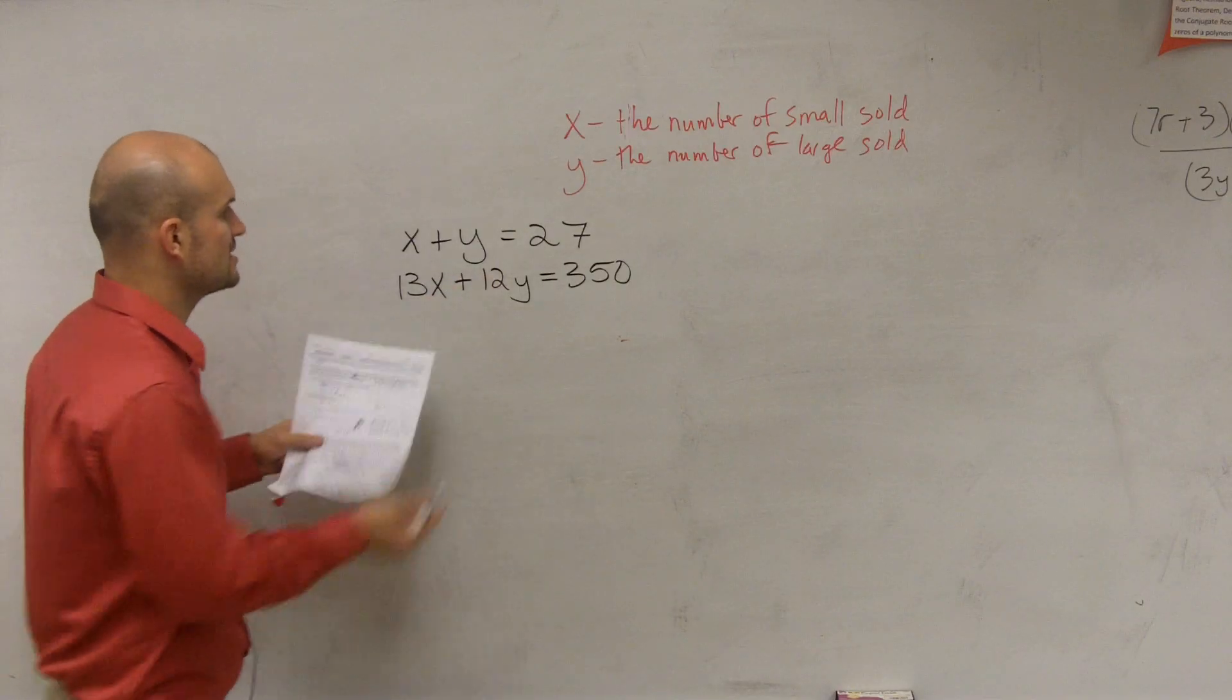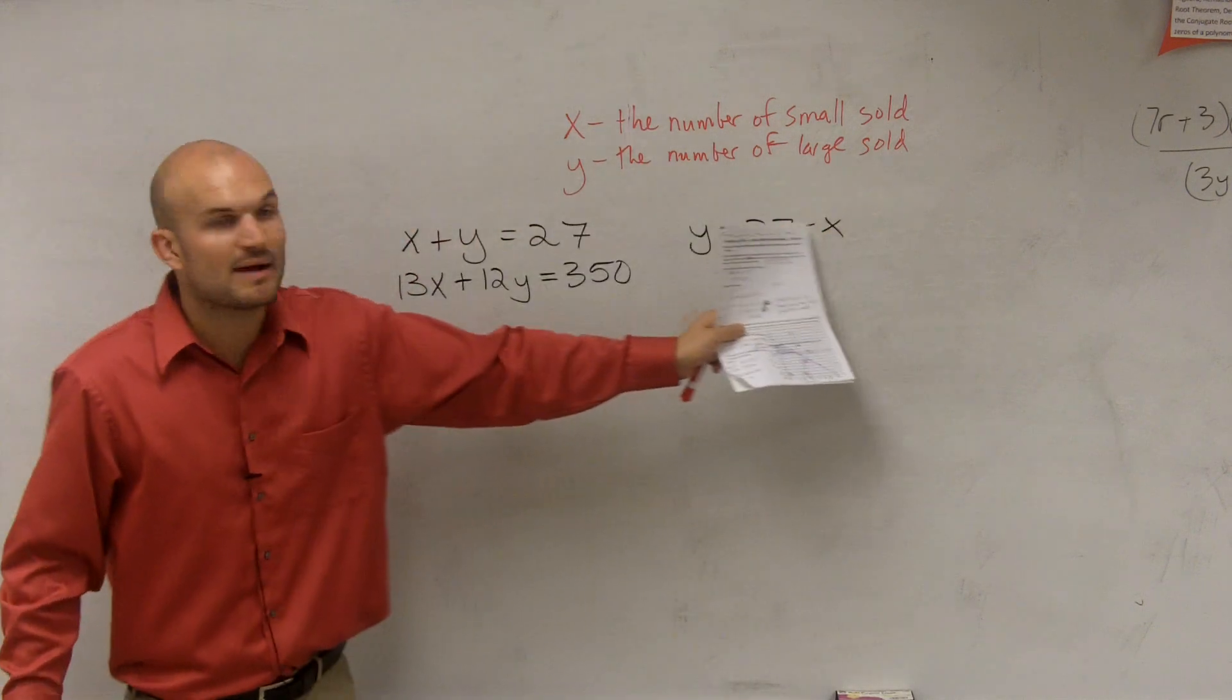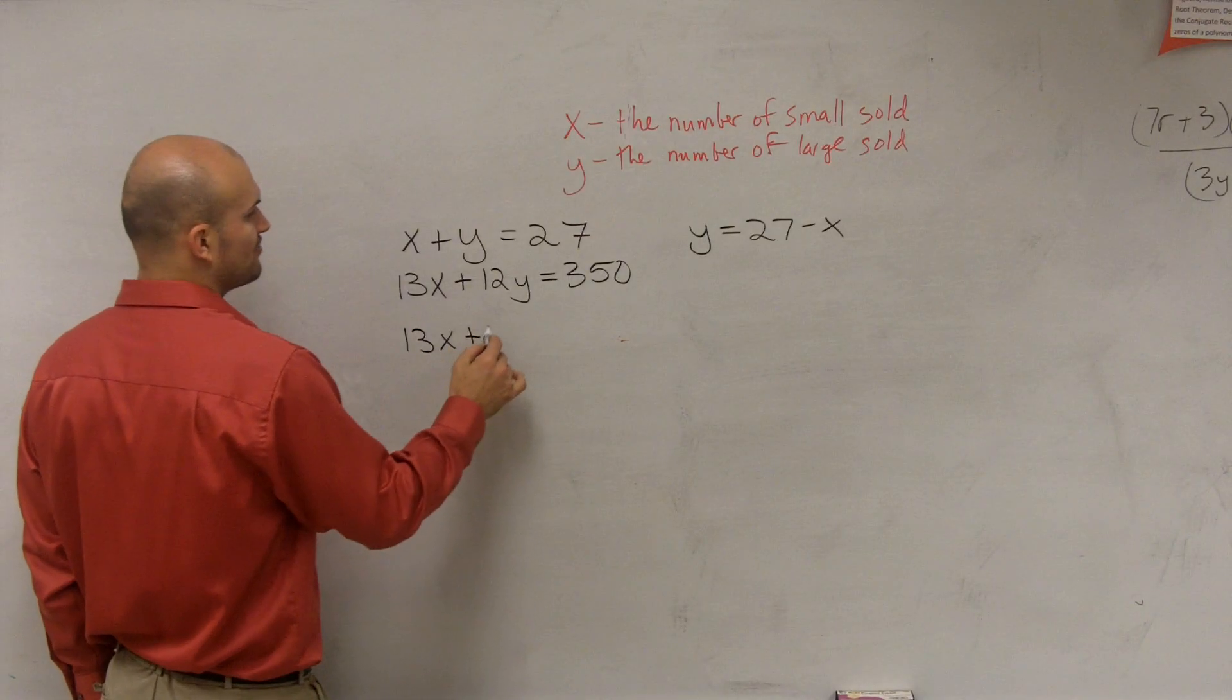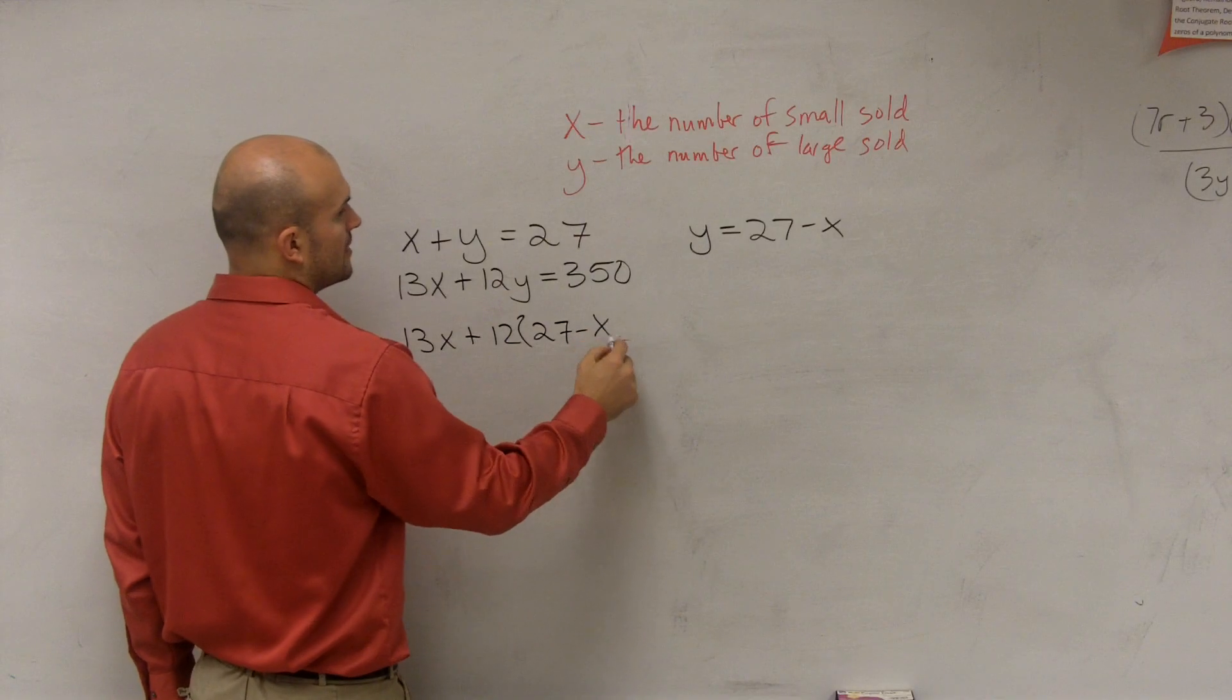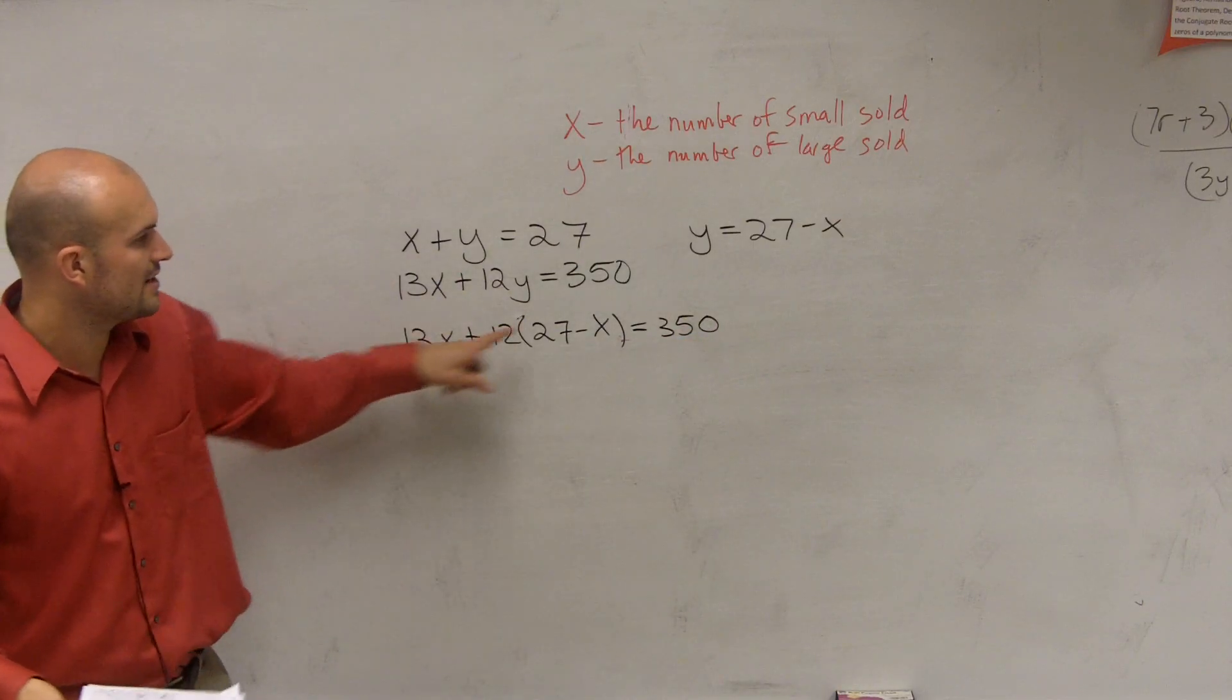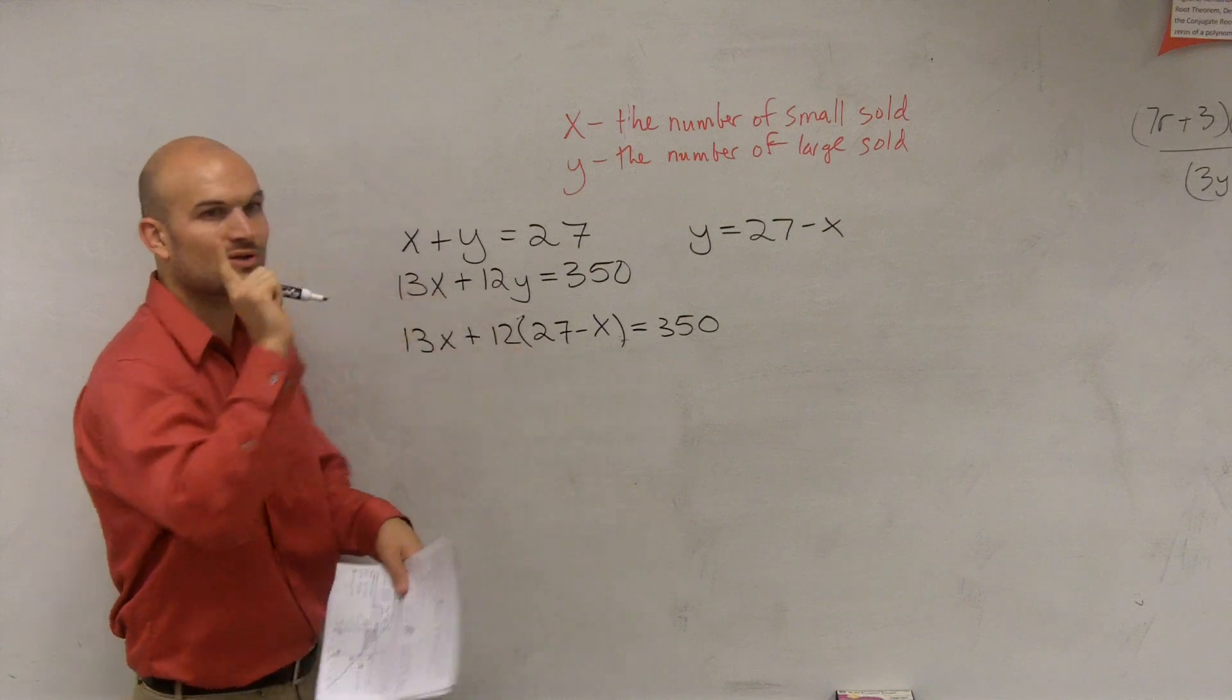For this one, what I'd want to substitute in is I'll just solve for Y. So I can write Y equals 27 minus X. Then, since my Y variable is equal to the expression 27 minus X, I'm going to plug in 13X plus 12. Instead of multiplying it by Y, I'm going to multiply it by 27 minus X. And that's going to equal 350. And again, the reason why I want to substitute it is because now you guys notice I'm only dealing with X's. I'm not dealing with Y's anymore. The Y variable is extinct. Now I have one equation with one variable.